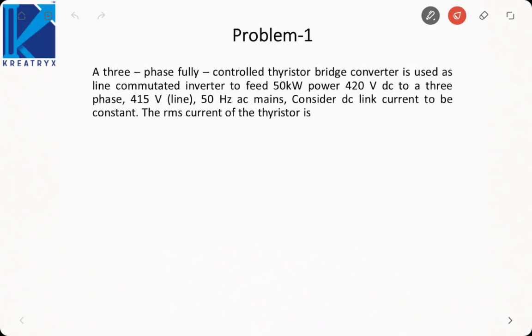So in our first problem, it is saying a three-phase fully controlled thyristor bridge converter is used as line commutated converter to feed 50 kilowatt power into 420 volt DC to a three-phase 415 volt 50 Hertz AC main. We need to find the RMS thyristor current. So if you see, it is based on fully controlled thyristor bridge converter.